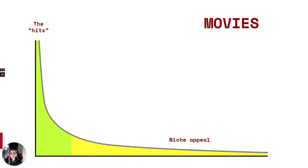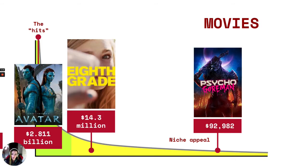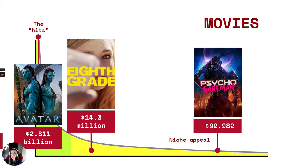If we think about it for movies, we might think of Avatar — the highest-grossing film of all time — which is obviously in the mass appeal section. And then you have tons of movies in the long tail. Most movies are in the long tail, like Eighth Grade, which made $14 million, or a horror movie called Psycho Gorman — a Canadian horror movie that grossed $92,000. But the people who watch it and like it really like it. These two movies are in the long tail.